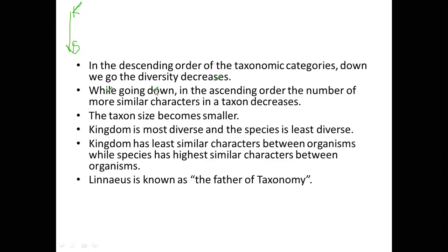While going up in the ascending order — from species to kingdom — the number of more similar characters in a taxon decreases. As we go from species to kingdom, the common characteristics become fewer. Animals have only a few common characteristics: they cannot perform autotropism, they are all heterotrophic, and there are some other characteristics like multicellularity and eukaryotism that define animals.